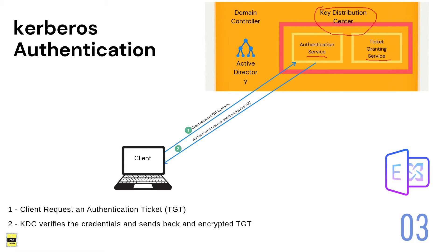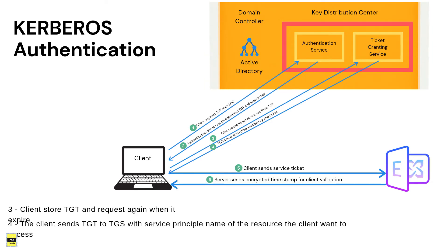Inside the KDC there are two services: the Authentication Service and the Ticket Granting Service. Once a client logs in to a computer, it requests an authentication ticket from the Authentication Service — this is known as a TGT, or Ticket Granting Ticket. The KDC verifies the credentials — the username and password — checks whether the user exists in the database, compares the hash values, and once validation is complete, it sends back an encrypted TGT.